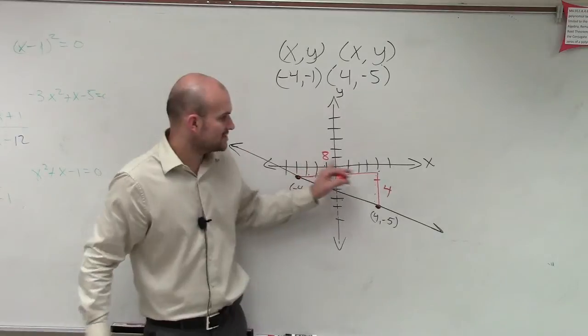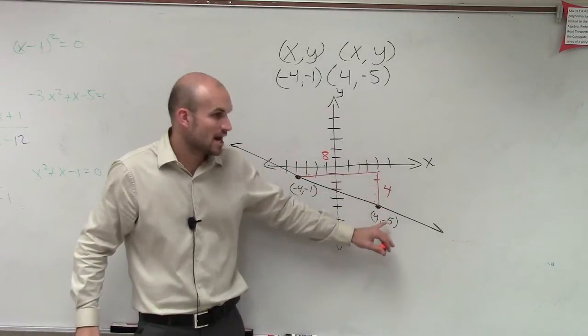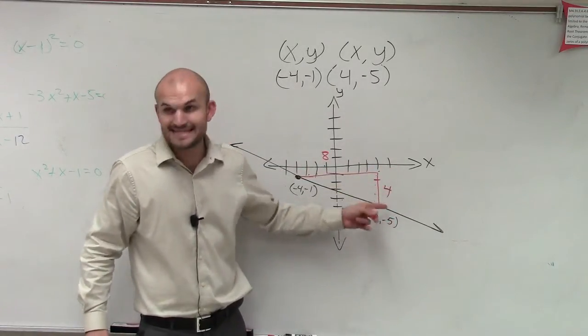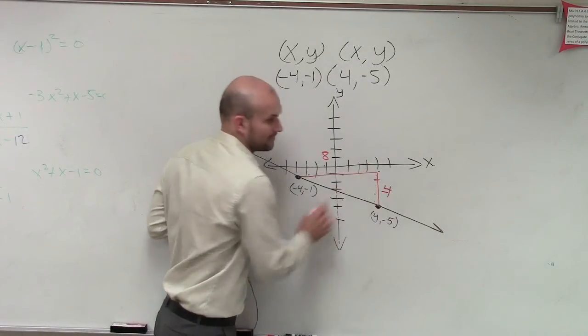So since I went down, I still went four units, but since it's in the negative direction, we make this a negative four. Does that make sense? Okay, so as I go right eight, down four.